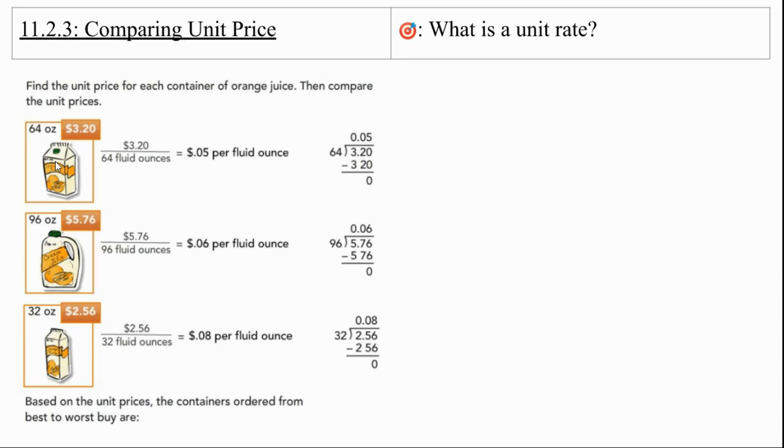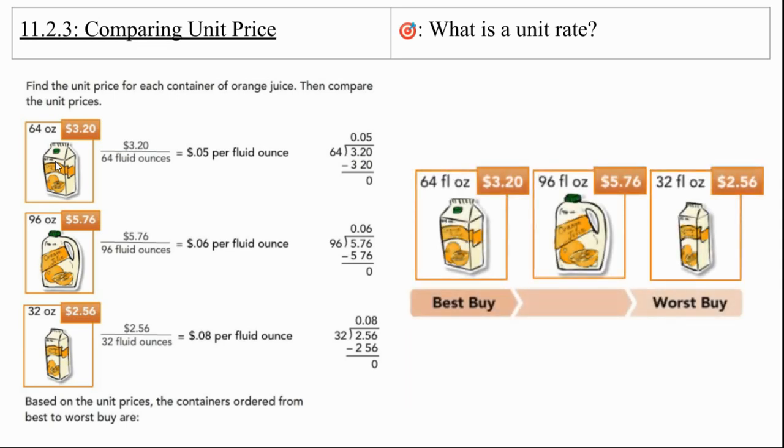So based on those unit prices, we're going to order the containers from best to worst buy. So our best buy is going to be the 64 ounce, then the 96, and then the worst one is the 32 ounce. You really do have to check those containers in the grocery store because sometimes the biggest one is the best value, and sometimes the smallest one is the best value.